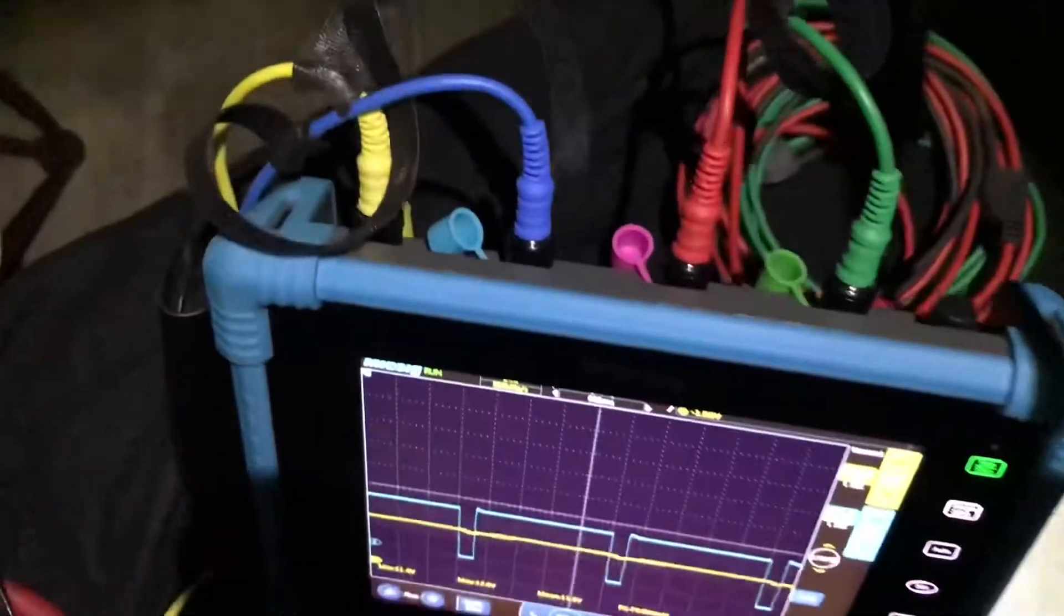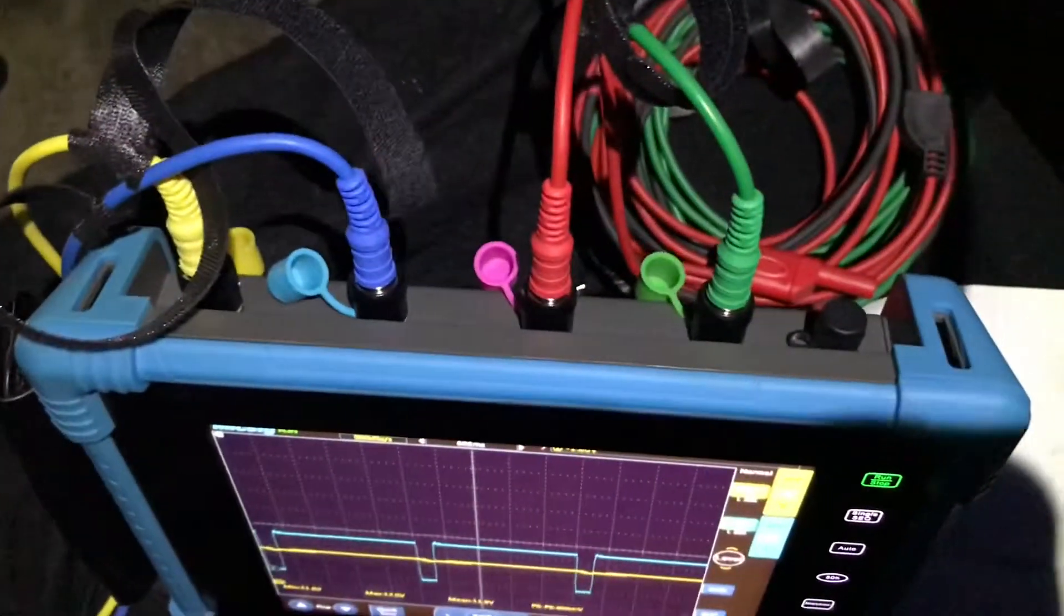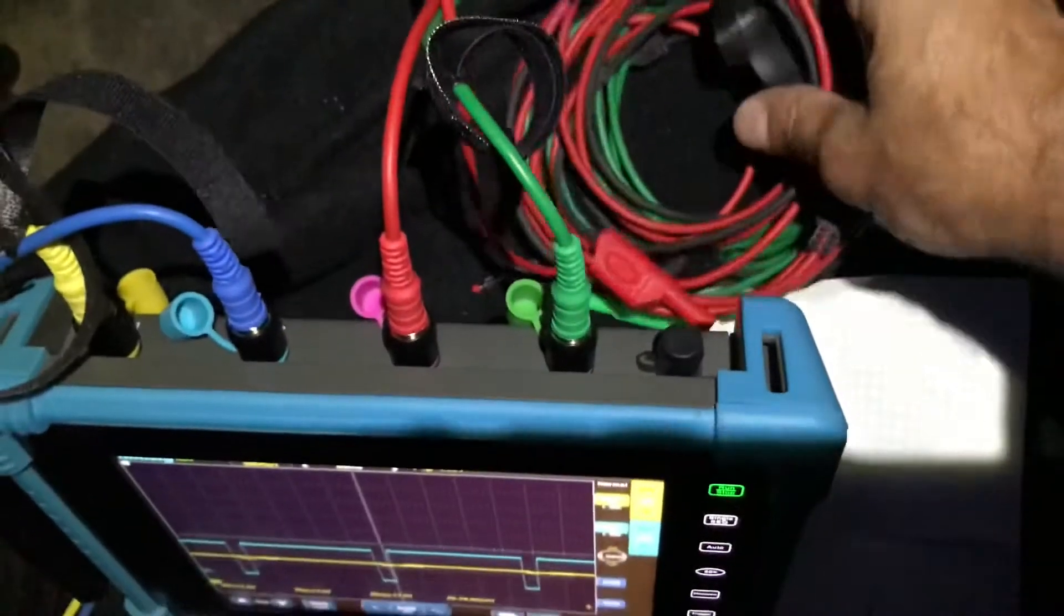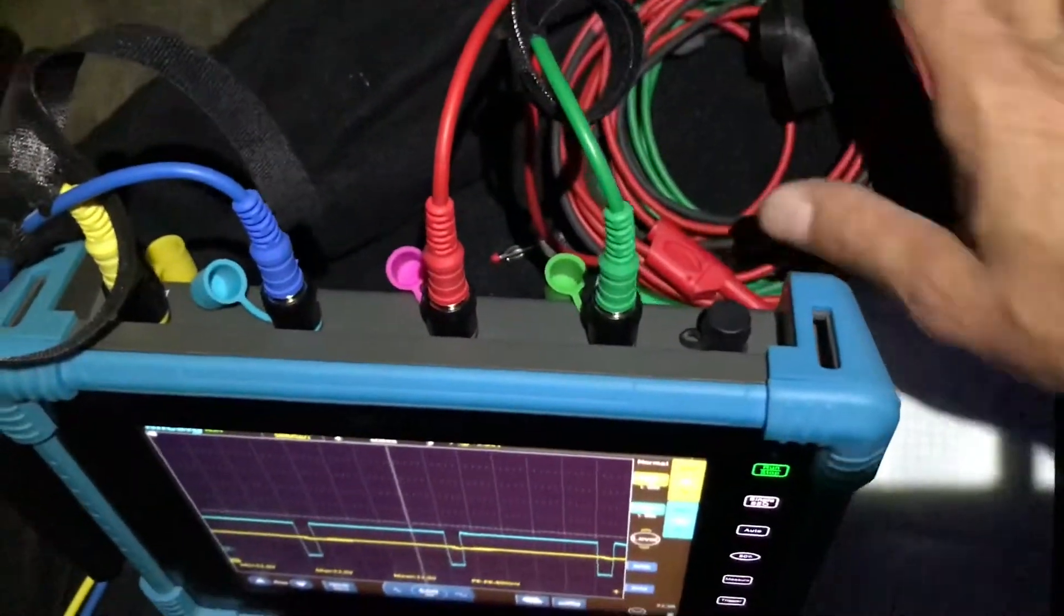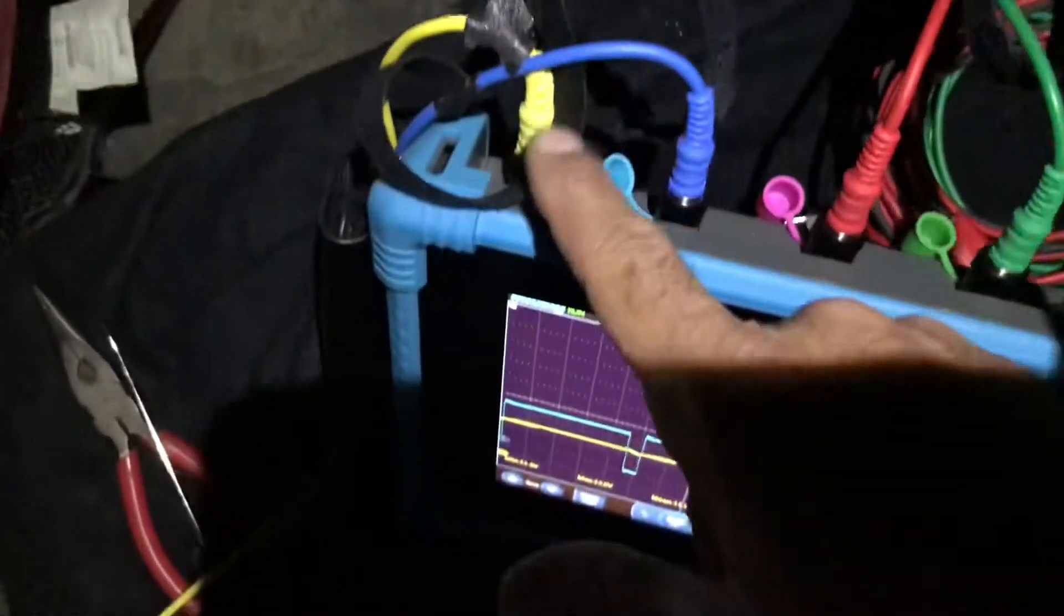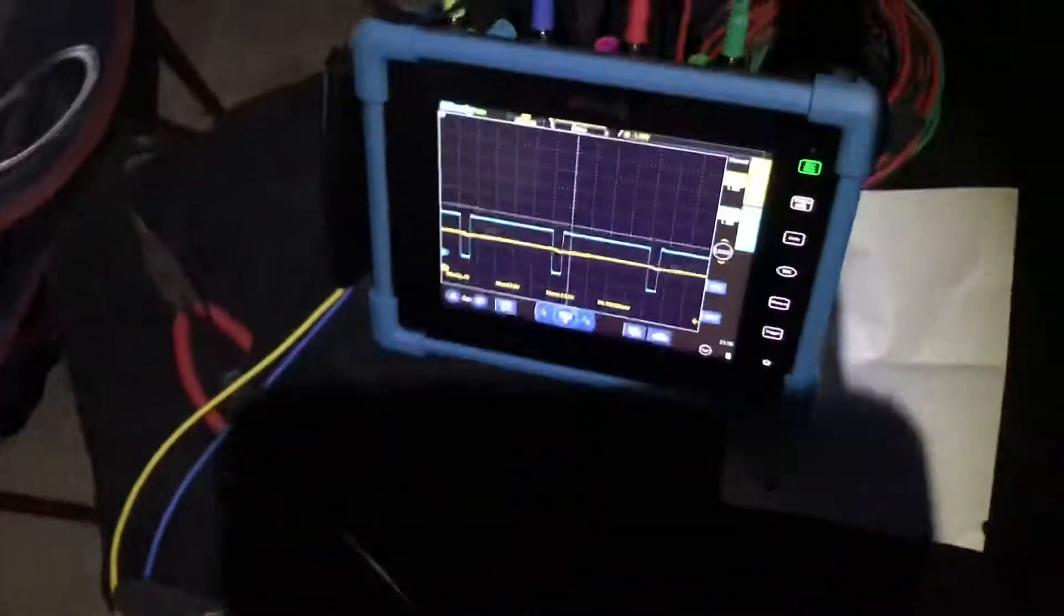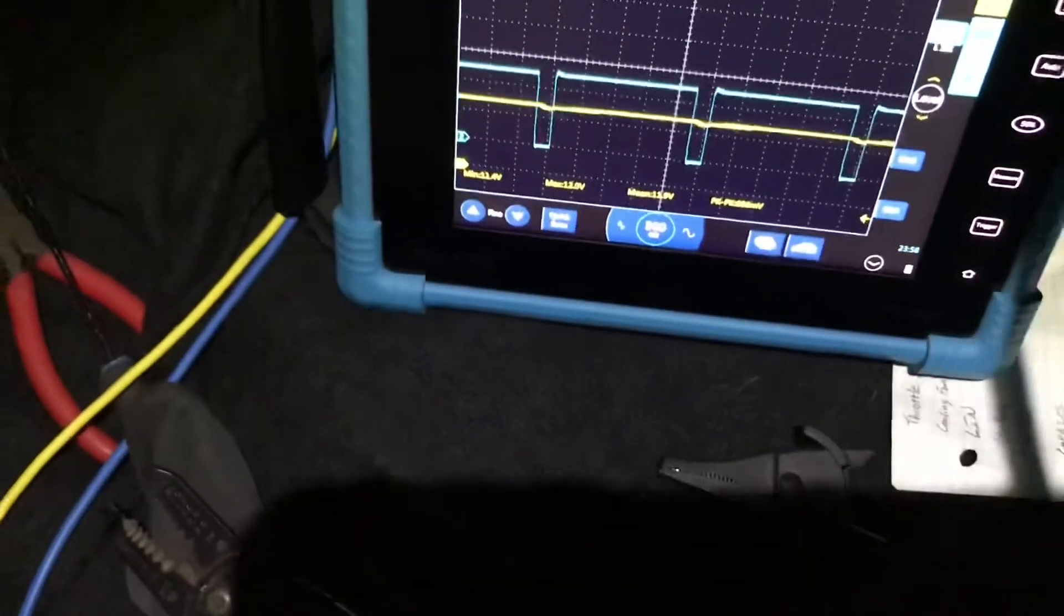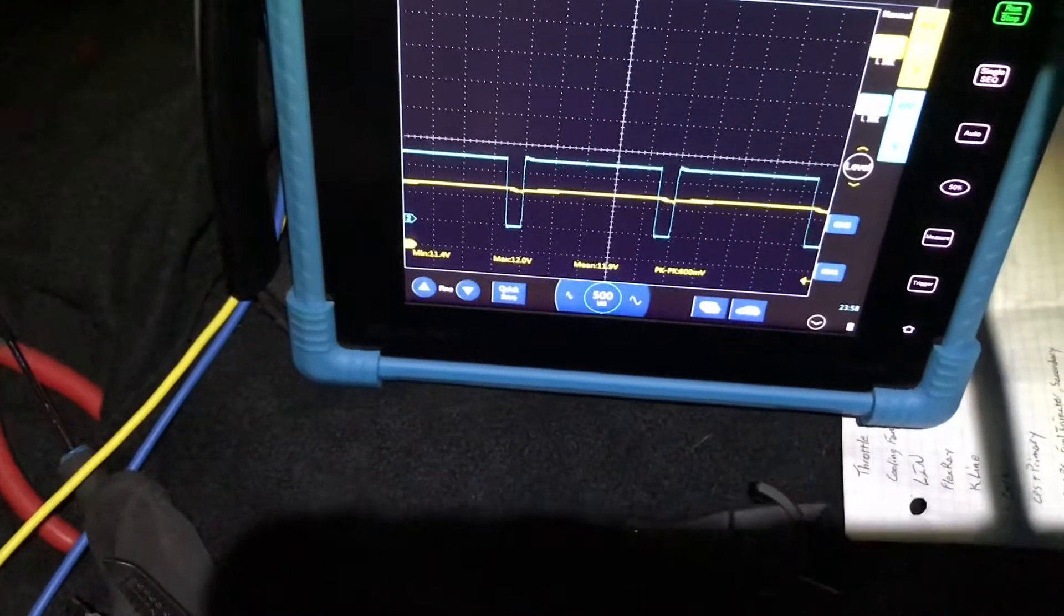I have all four channels plugged in, but as you can see, channel three and four is just sitting right here not being used at the moment. We're using channel one and two. Channel one is the yellow trace, blue is channel two, and if you follow it over, we have our grounds.